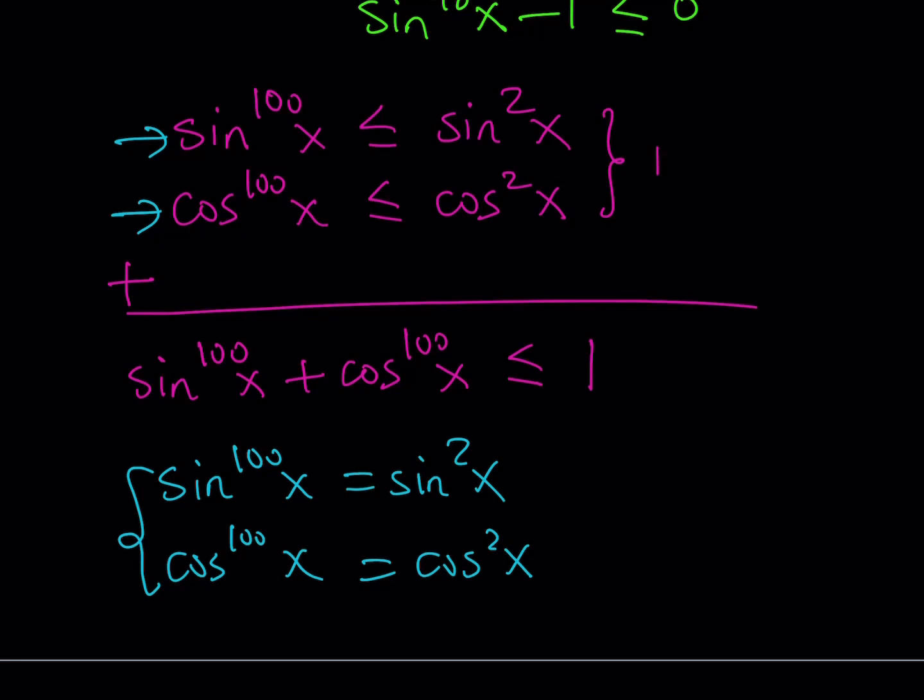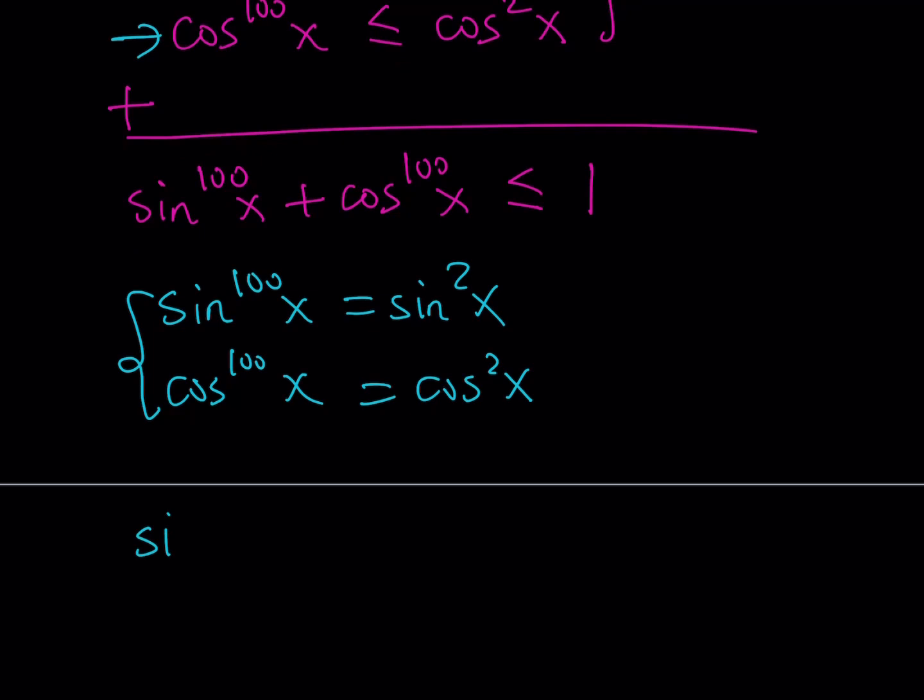Now, how do we handle this system? Easy. I mean, think about it. When does sine x to the second power equal the 100th power? Well, one of the cases is sine x could be 0. Or, sine x could be 1 or negative 1. And when, for example, if sine x is 0, then cosine is 1 or negative 1, or vice versa. So it's just going to work.